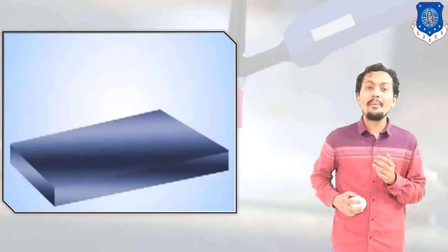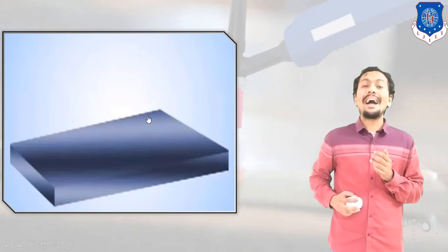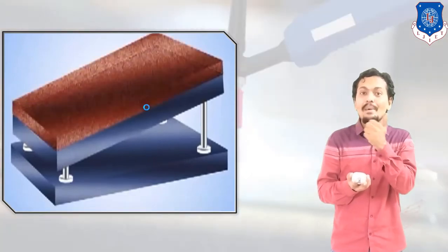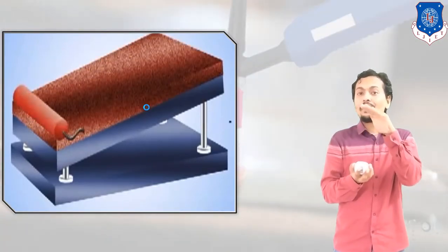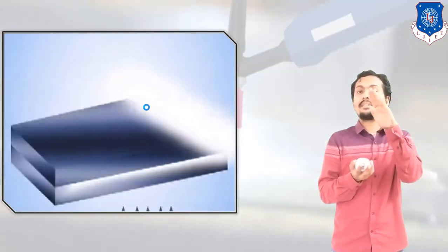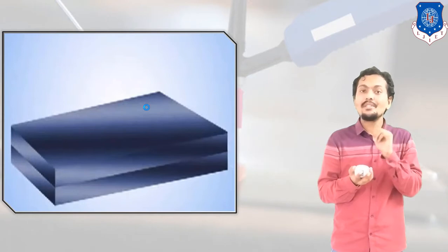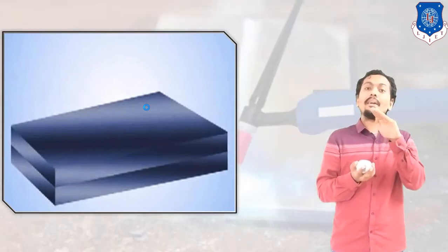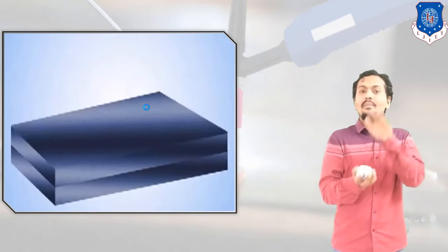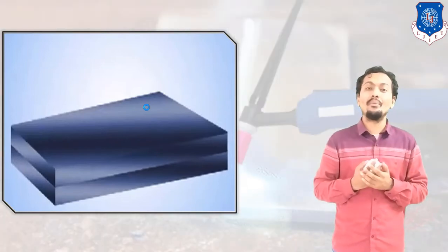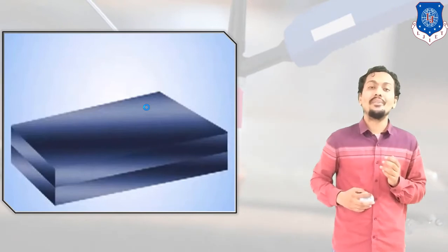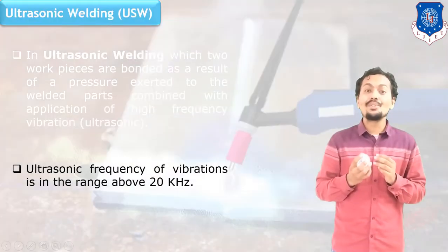Here I have mentioned a video on explosive welding. The base plate and flyer plate are shown in this video, and above the flyer plate, detonators are placed. With the help of burning and combustion of the powder, the flyer plate strikes the base plate. With the help of this striking and the resulting heat transfer, both plates can be welded together. This is the principle of explosive welding.